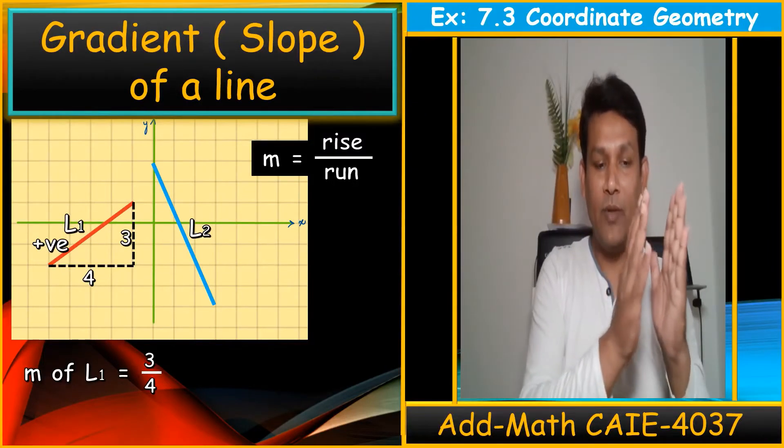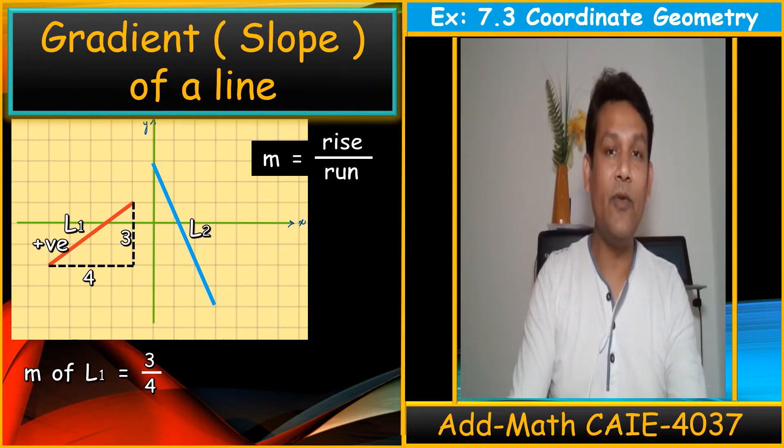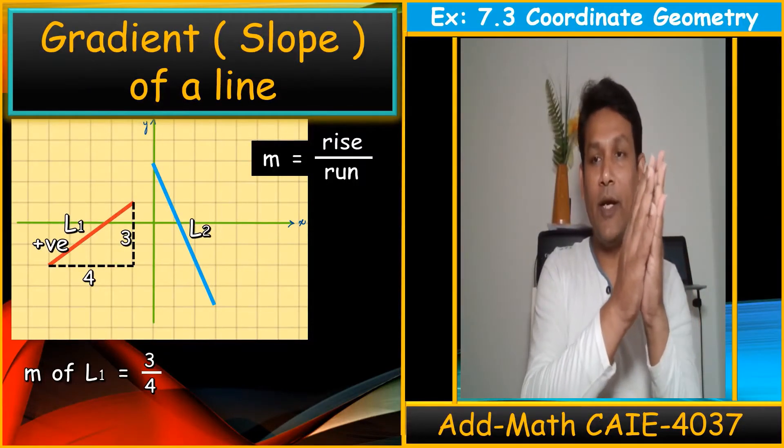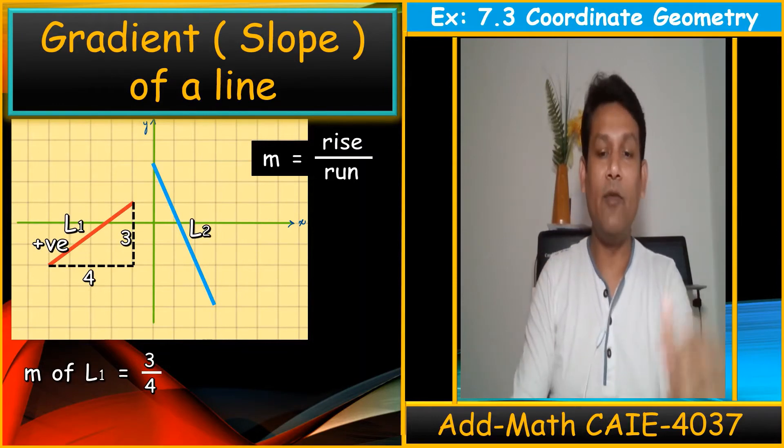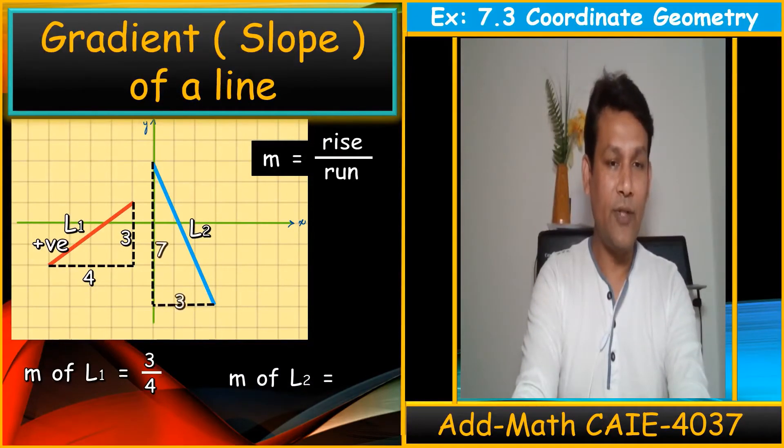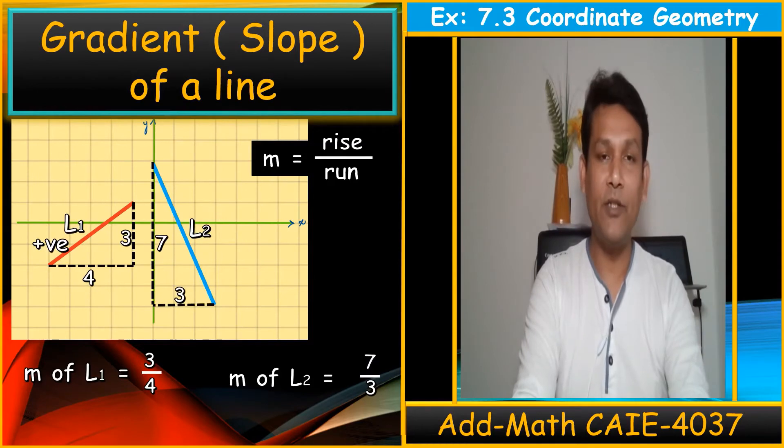Remember, from left to right when we move up is always positive gradient. Same thing, when we move from left to right down, that is negative gradient. I will use this line 2. The rise is 7 and run is 3. This gradient is 7 upon 3. Very simple, rise upon run.